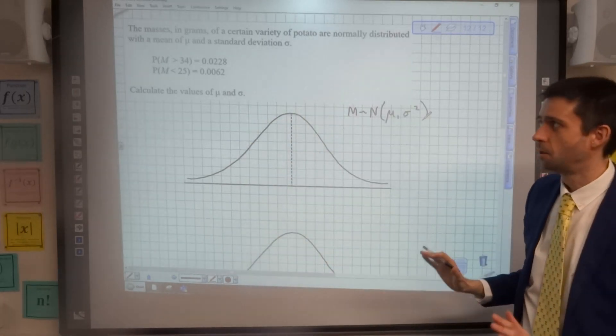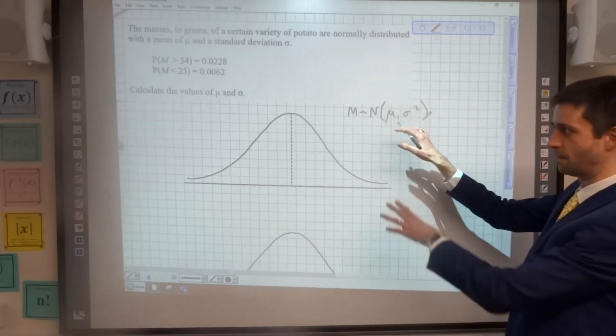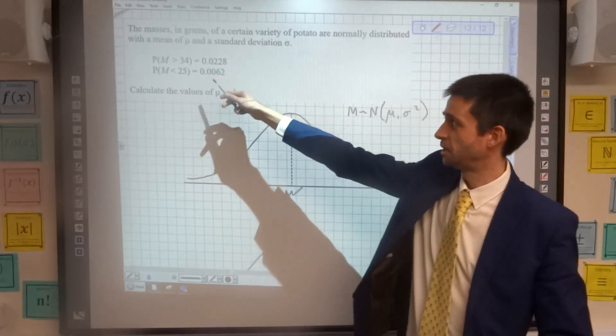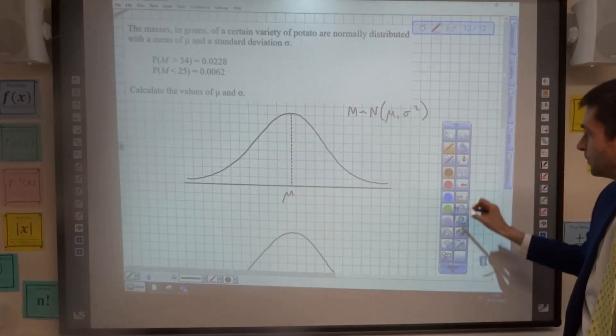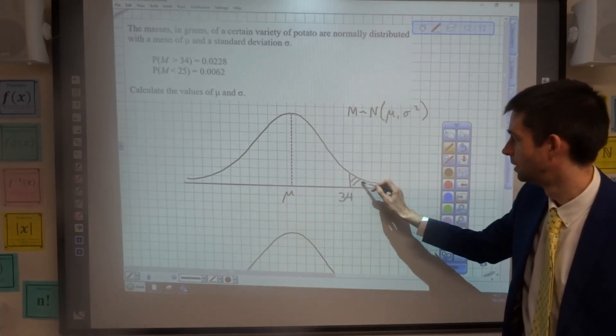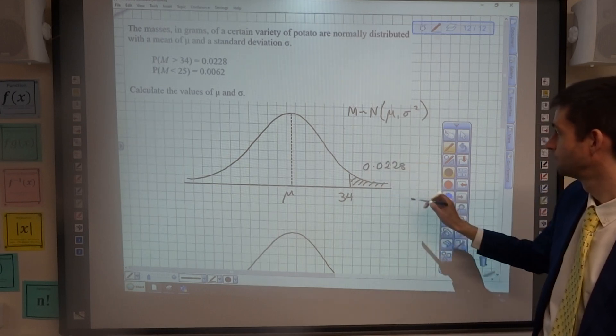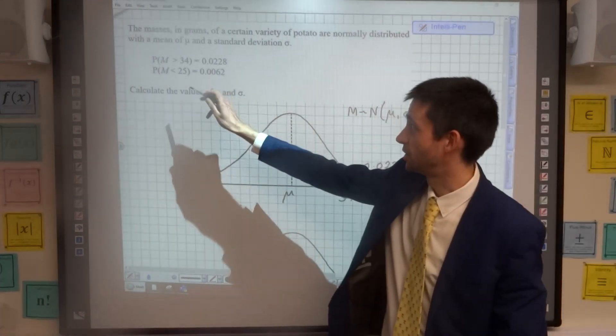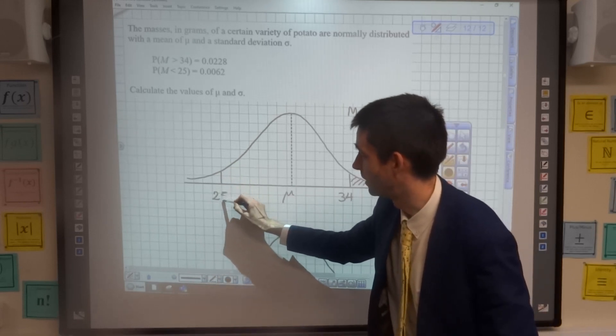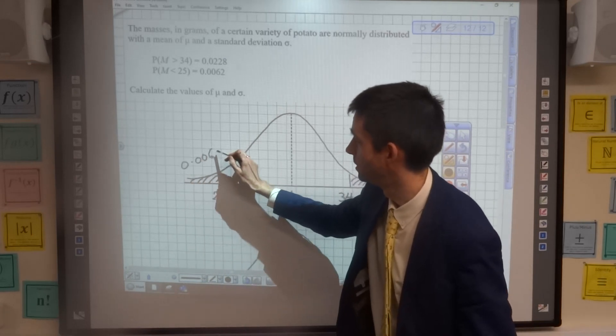Let's have a think about where those values would be on our normal distribution. I've drawn out the normal distribution for m here, so I'm going to label the mean as mu. Now m is greater than 34 has a very small probability, so 34 has clearly got to be up here somewhere, and the area to the right of that is 0.0228. The probability that m is less than 25 is a very small probability to the left, so there's your 25, and that area is 0.0062.